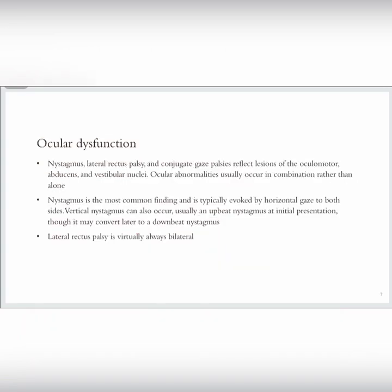As for ocular dysfunction, nystagmus, lateral rectus paralysis, and conjugate gaze paralysis may be found. These are lesions of the oculomotor abducens and vestibular nuclei. Ocular abnormalities are usually found in combination rather than alone. Nystagmus is the most common finding, mostly horizontal gaze. Palsy of the oculomotor abducens may also be found. Lateral rectus paralysis is virtually always bilateral.